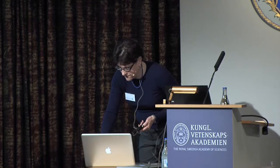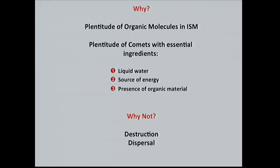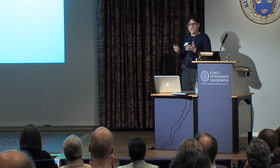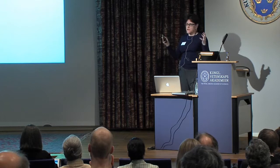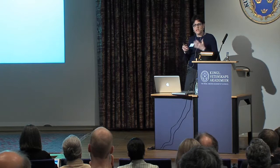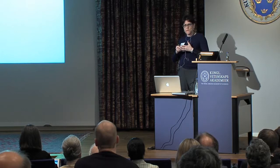Why look for an extraterrestrial source of prebiotic carbon when organic molecules might be generated on Earth? There are a lot of organic molecules in the interstellar medium, and many comets — especially in the early history of our solar system — contain what we consider the essential ingredients for life: liquid water, a source of energy, and organic material. Cometary and asteroid delivery has been dismissed for years because of the very severe conditions, with an assumption of widespread destruction of organics on impact, and also the challenge of concentrating dispersed material.